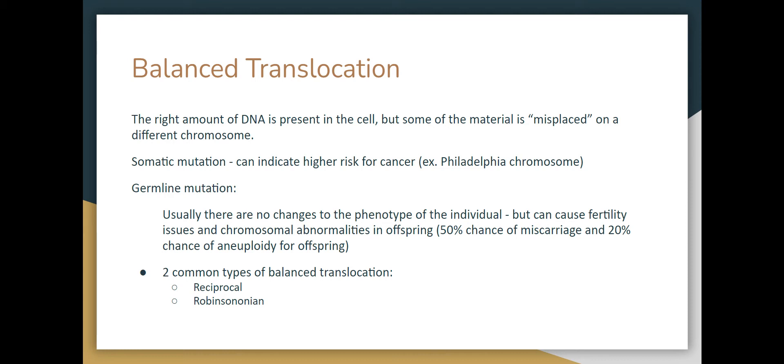So you can have a somatic mutation — for example, the Philadelphia chromosome — where material from chromosome nine attaches to chromosome 22. It's a balanced translocation, and it codes for things that lead to the development of leukemia. Our medications that treat it target that protein that's created when this gene expresses itself and turns it off.